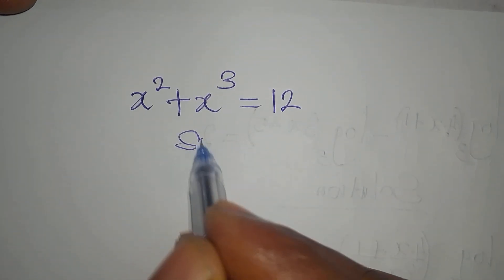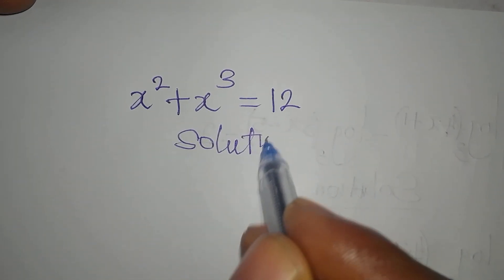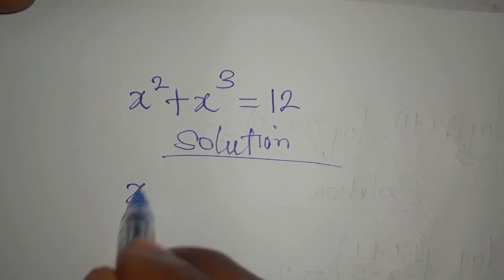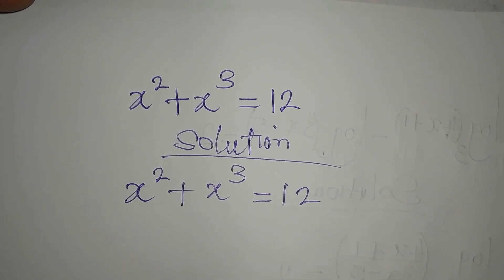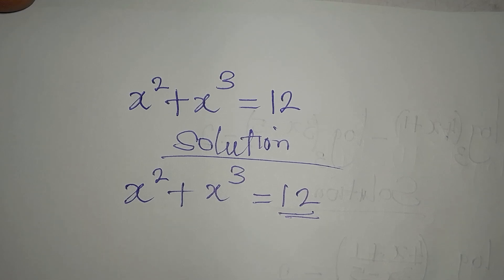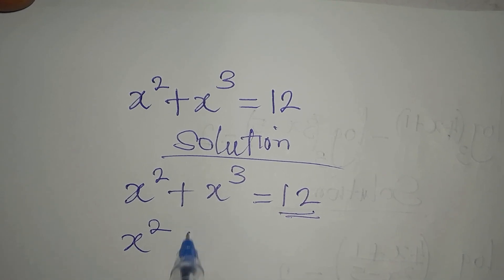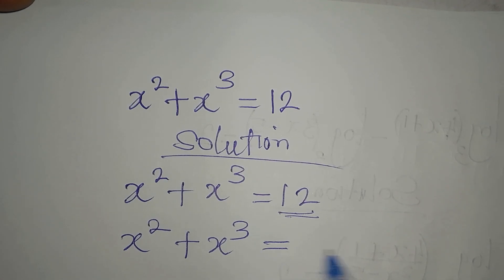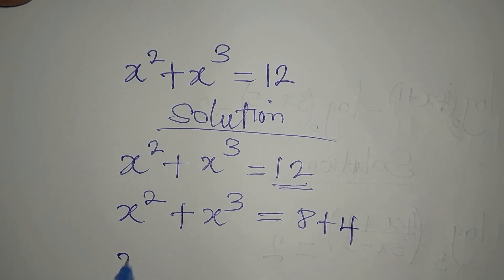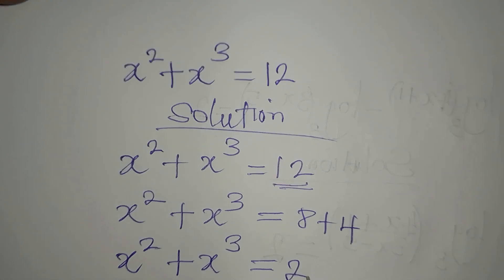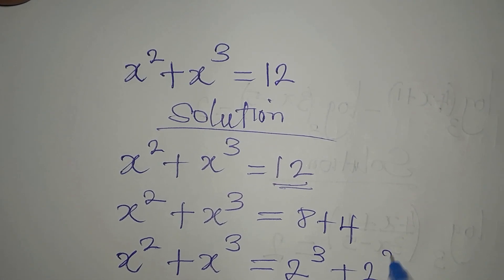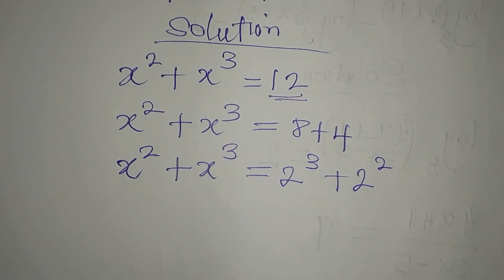Let's provide the solution to this problem: x squared plus x cubed equals 12. My target is to break 12 down into two parts, so we'll have x squared plus x cubed equals 8 plus 4, which means 2 to the power of 3 plus 2 to the power of 2.